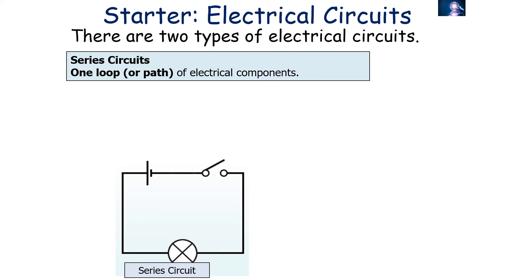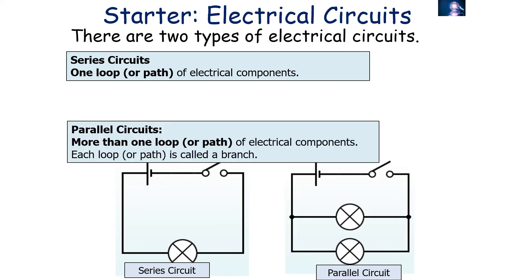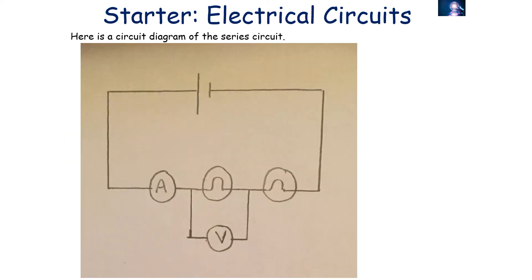So there are two types of electrical circuits: series circuits, which have one loop or path of electrical components, and parallel circuits, which have more than one loop or path of electrical components, where each loop or path is called a branch.